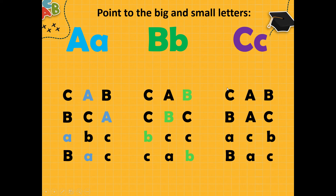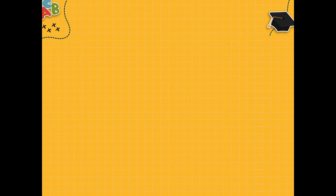C. Where is small c here? Yes, this is c. Next. Where is the big C? Yes, it is big C. Next. Where is the small c? Yes, it is small c. And here we have small c. Yes, it is small c.